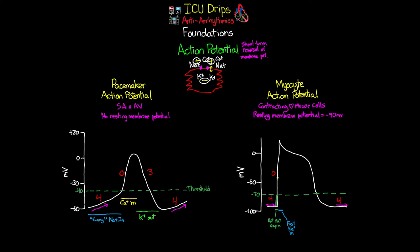When the cell reaches positive 10 millivolts, the fast sodium channels close, but the slow calcium channels remain open. Voltage-gated potassium channels also open, causing potassium to leave the cell and a slight decrease in voltage. This is phase one, the early repolarization phase. At this point, slow calcium channels and voltage-gated potassium channels are both open together — calcium ions coming in and potassium ions leaving — causing the voltage to remain relatively stable. This is phase two, the plateau phase.